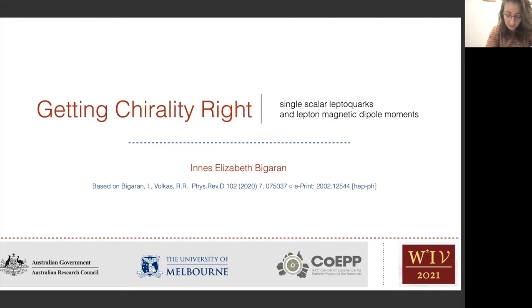Hi everyone. My name is Ines Begarin and I'm a PhD student here at the University of Melbourne, and today I'll be discussing single-scale leptoquark solutions to the g-2 problem, the electron and muon, which we've titled Getting Chirality Right. This work is based on work I've done with Raymond Volpes, which was published in PRD in 2020.